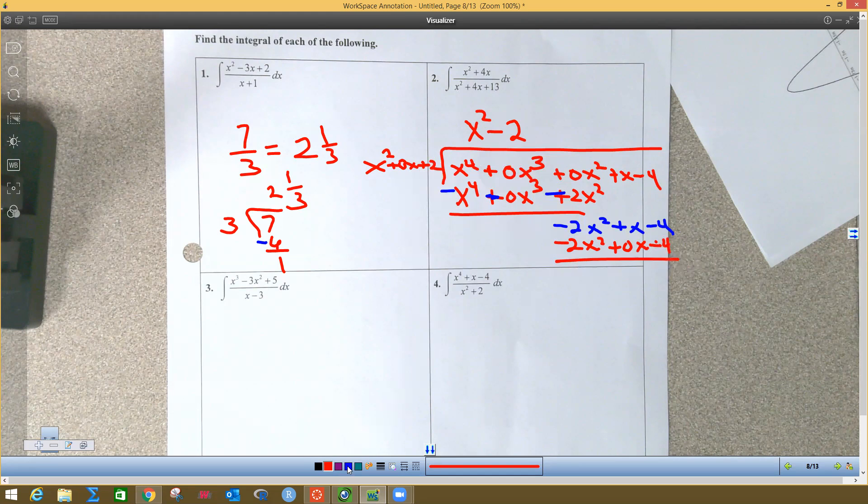And then I have to subtract them, so this becomes a plus, this is a minus, this is a plus. So everything cancels out except that x. Now that x is a smaller numerator than this one, so this is my remainder.